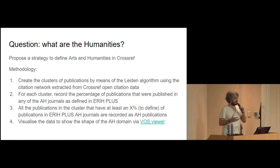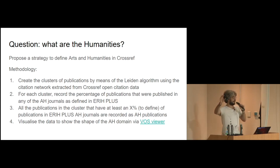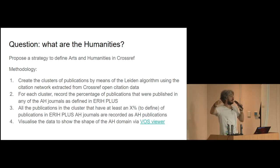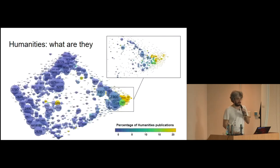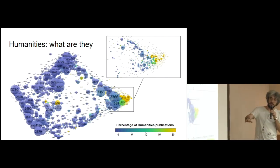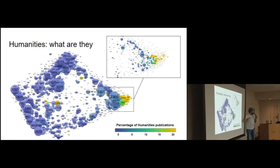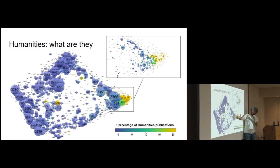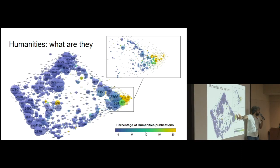Starting from here, we developed a methodology to find what constitutes humanities within this big cluster of publications. We reused the Leiden algorithm to cluster various publications and examined how many were published in ARI+ journals typical of humanities. We identified yellow clusters of publications in which at least 20% of the articles have been published in ARI+ journals.